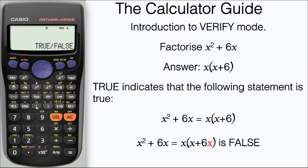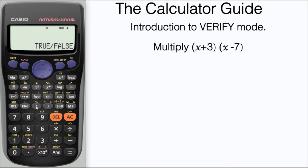One last question to have a go at yourself. This time multiply out the brackets x plus 3 and x minus 7. Pause the video now if you want to have a go yourself.